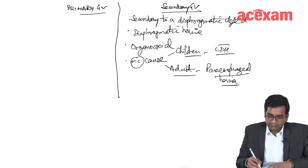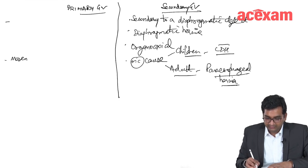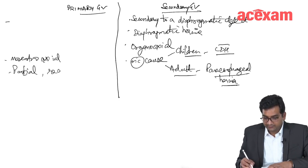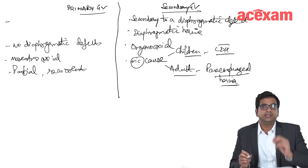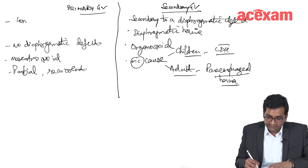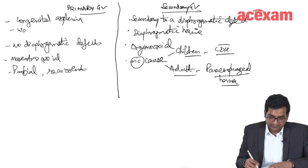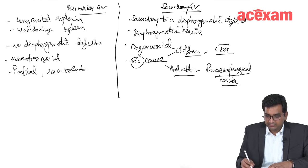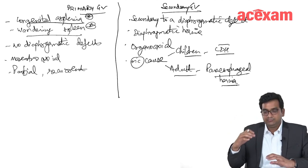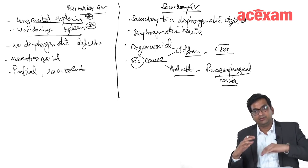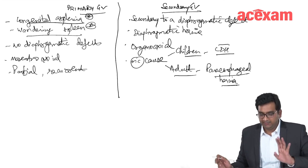Primary gastric volvulus is mainly mesenteroaxial. It is partial and recurrent, and there is no diaphragmatic defect. However, it is associated with congenital anomalies such as congenital asplenia or wandering spleen. Due to splenic pathology, there is excessive mobilization of the stomach leading to primary gastric volvulus.